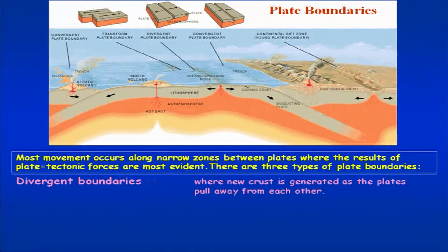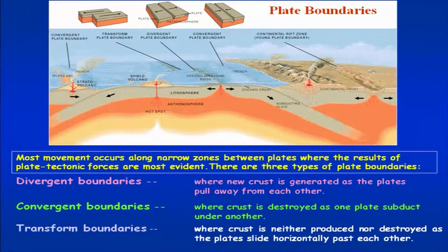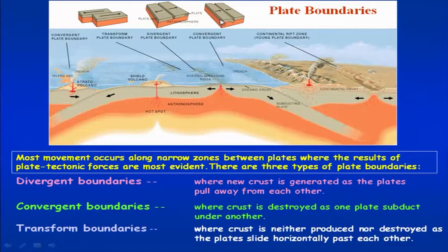Divergent plate boundaries are where new crust is generated as the plates pull away from each other. The second is the convergent plate boundary, where one plate subducts below the another one — hence it is also termed as destructive margins. The third is the transform plate boundary, where the crust is neither produced nor destroyed; mainly the plates slide horizontally past each other. On the top of the diagram, these three plate boundaries have been shown — divergent in the center, convergent, and transform.